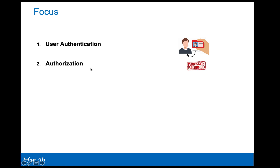The other part that comes into play is authorization, which relates to allowing the user to use the appropriate services — for example, whether the user is allowed to use the internet, voice, or VoLTE (Voice over LTE), and also whether the user is allowed access to the network from certain areas.